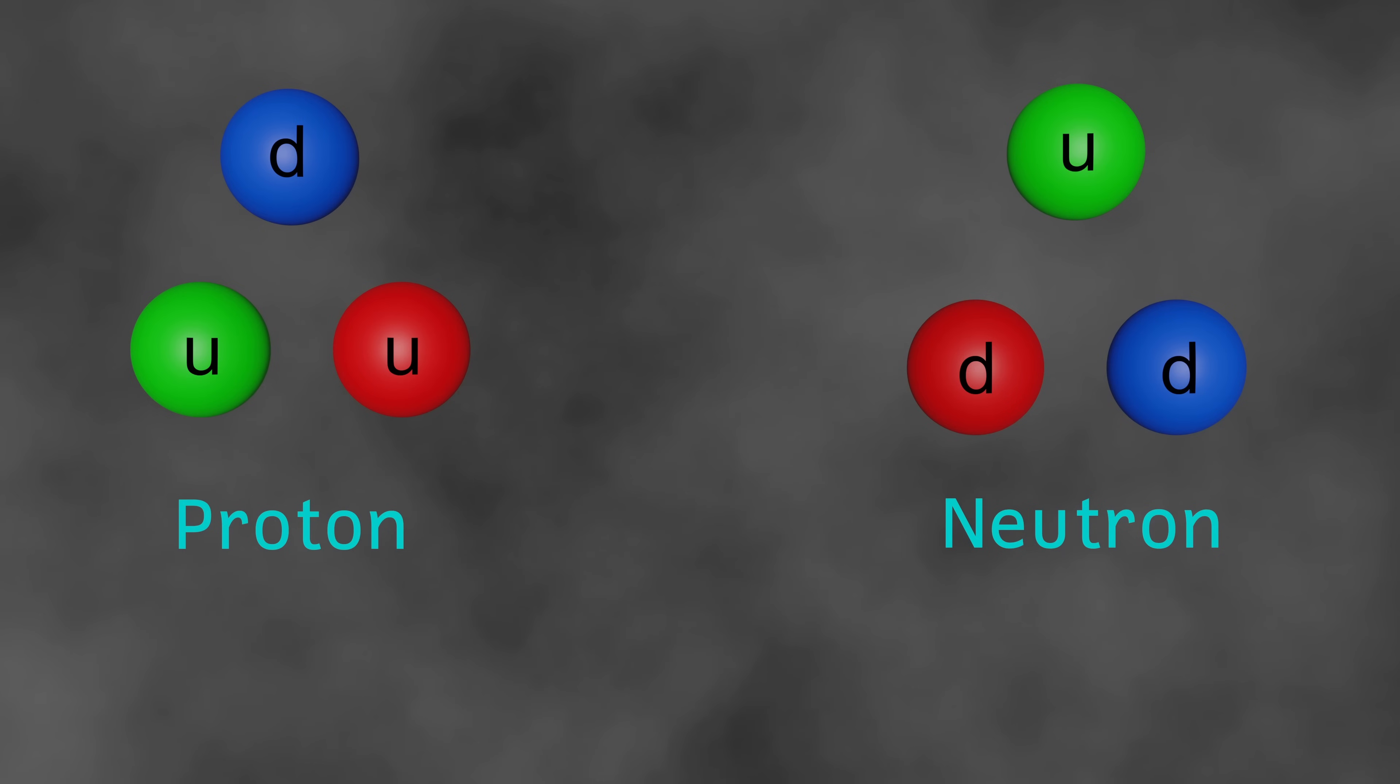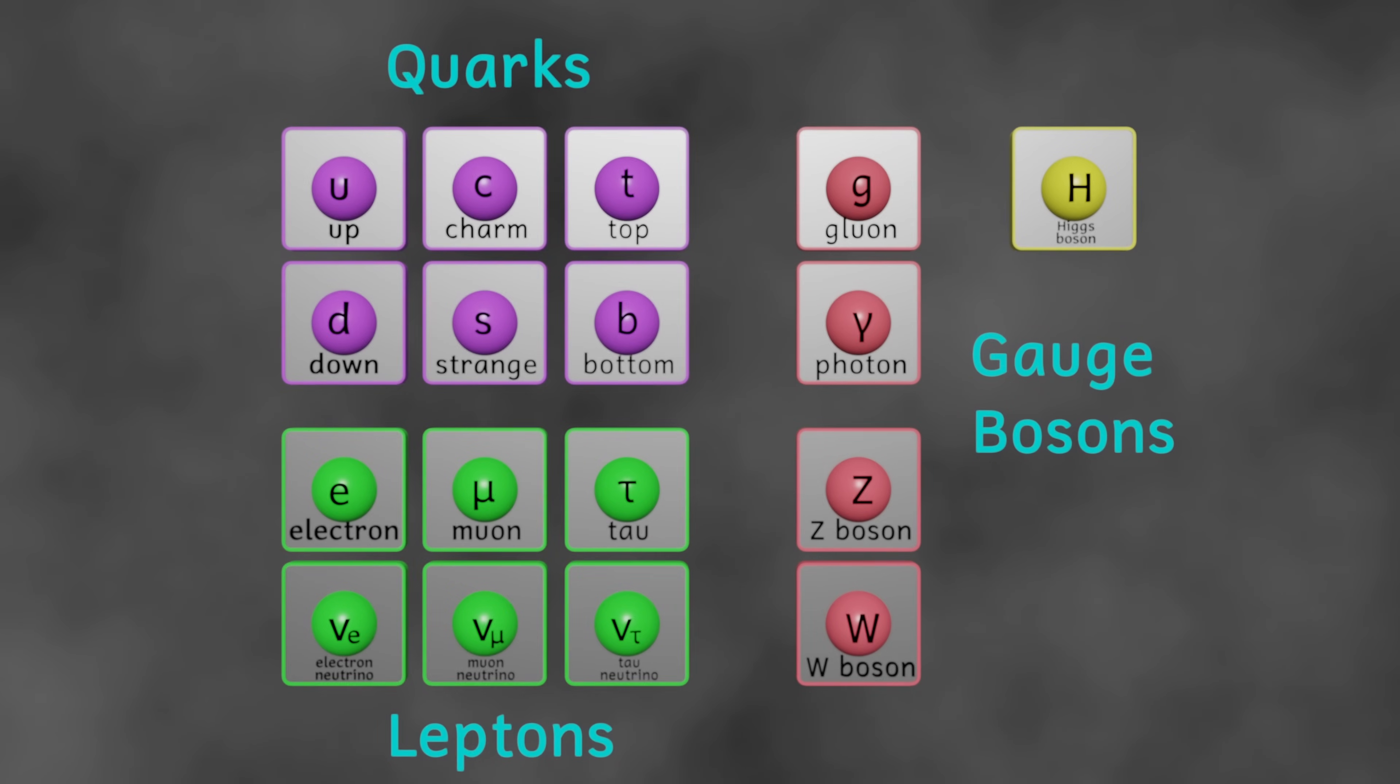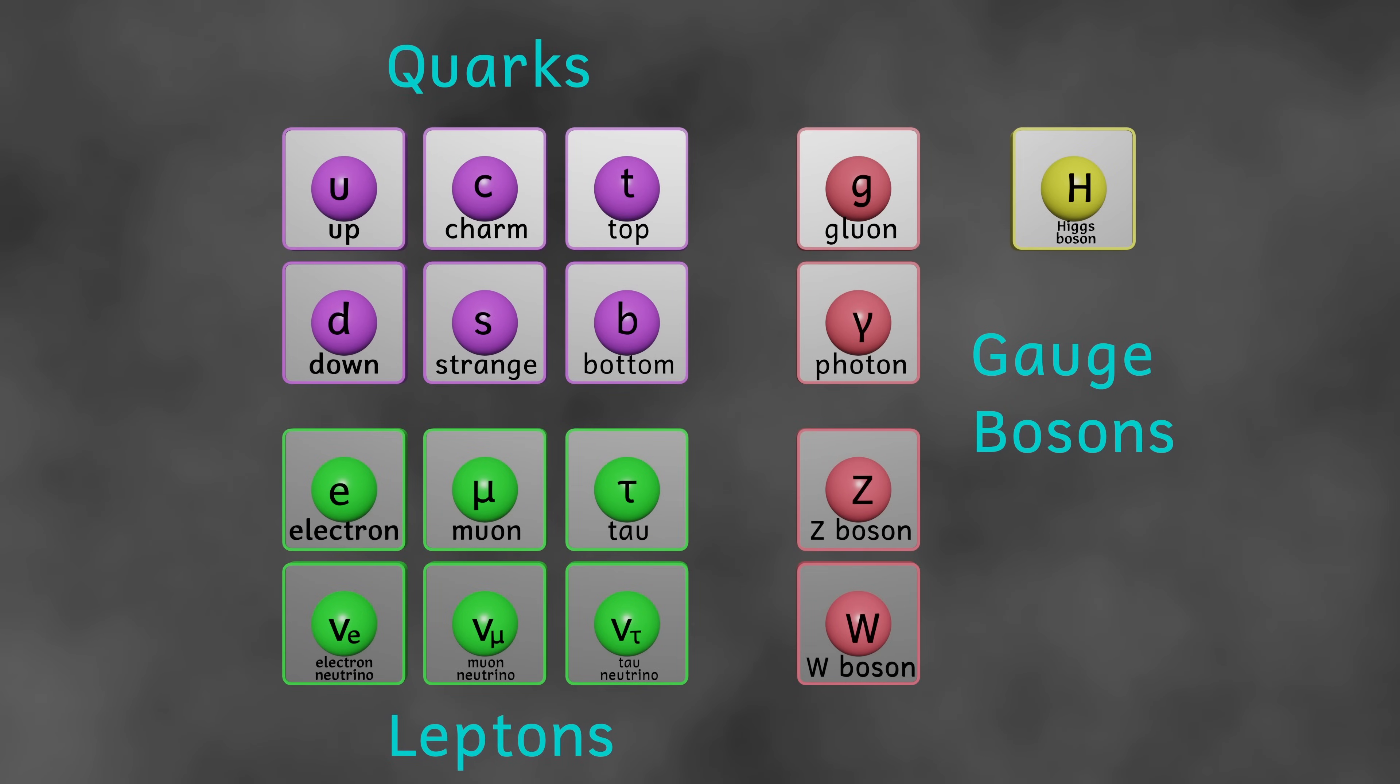But what are quarks? Quarks are part of the standard model of particle physics, which we can see here. And there are six types of quark, and we call the different types flavours. The six flavours are up, down, top, bottom, strange and charm.